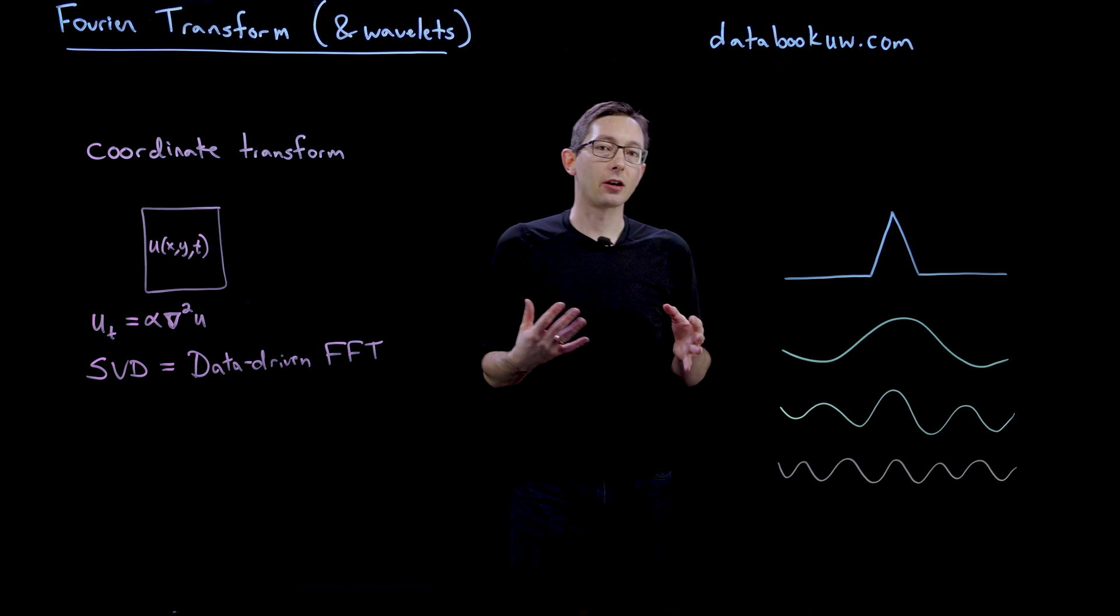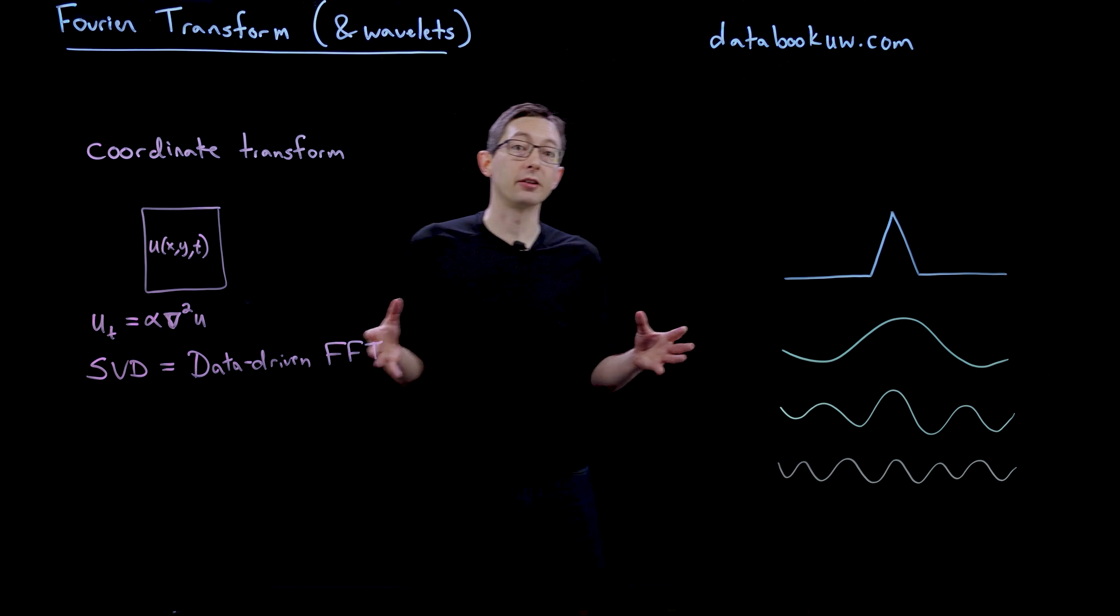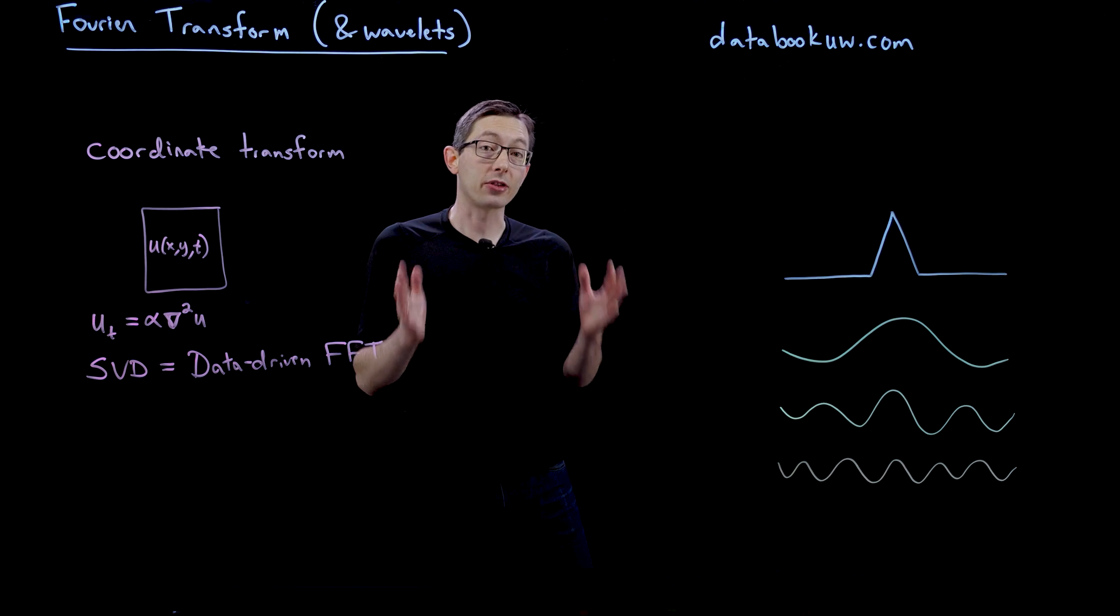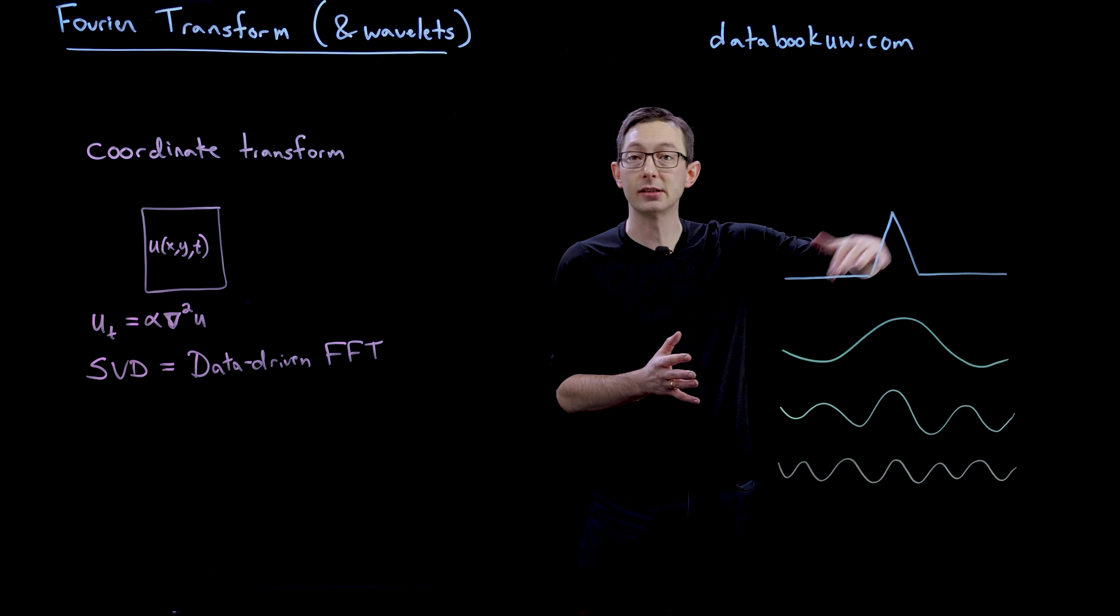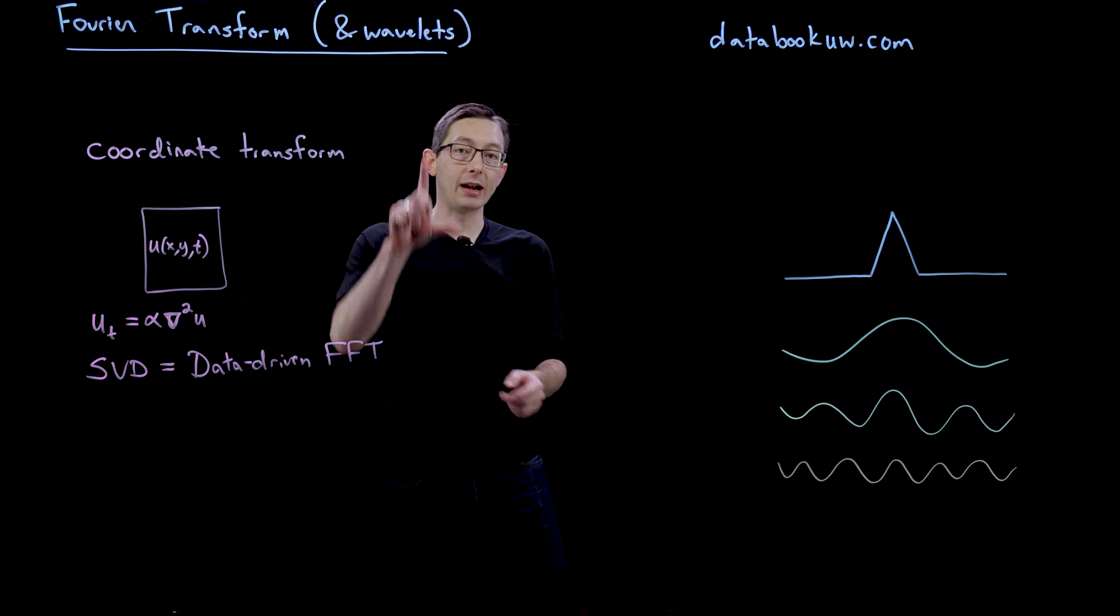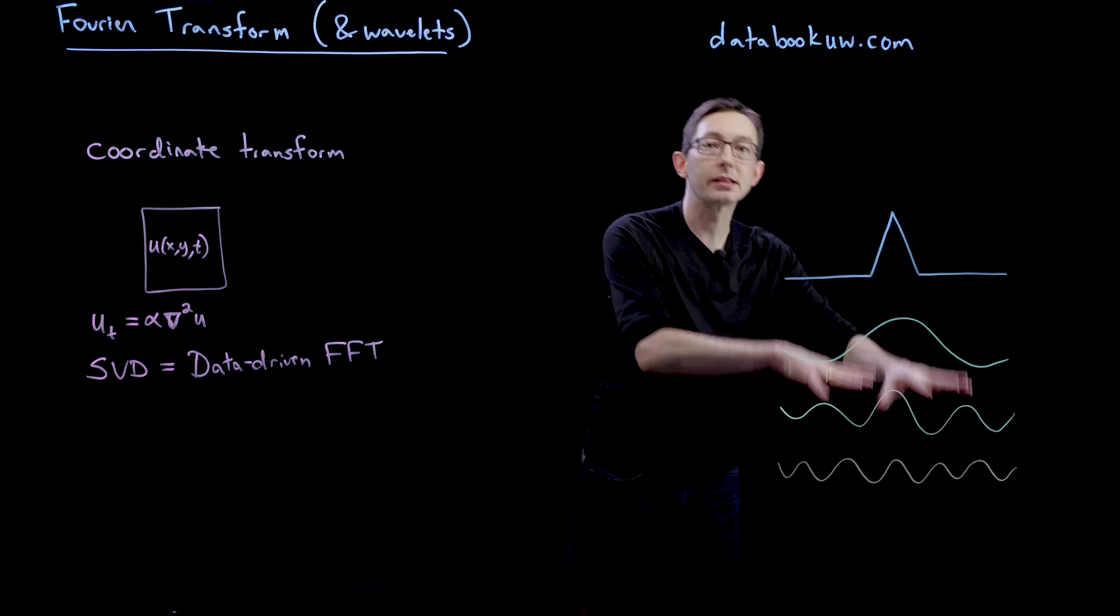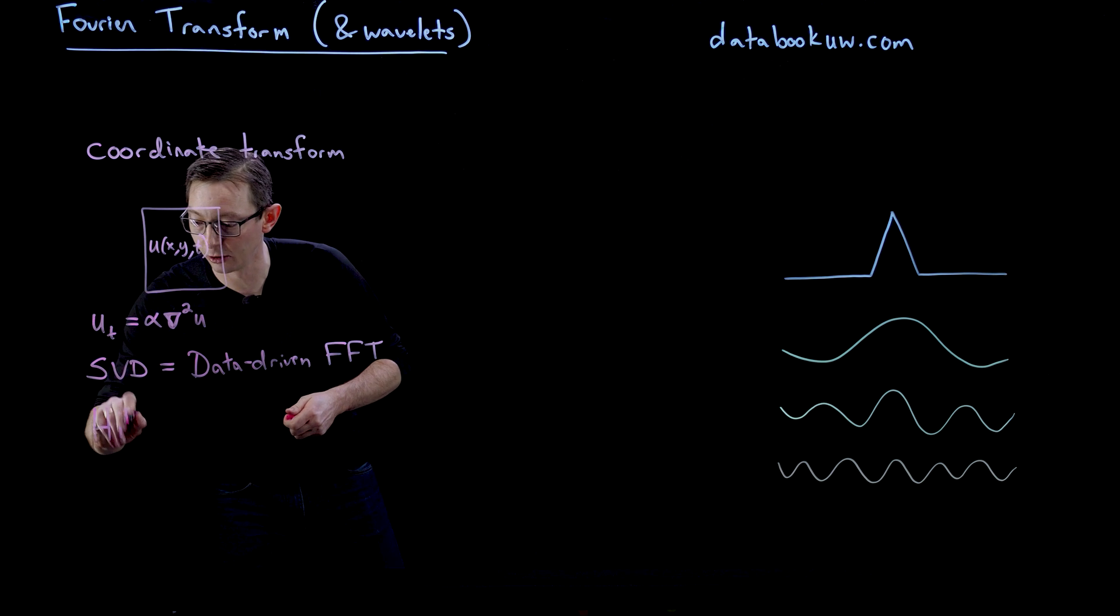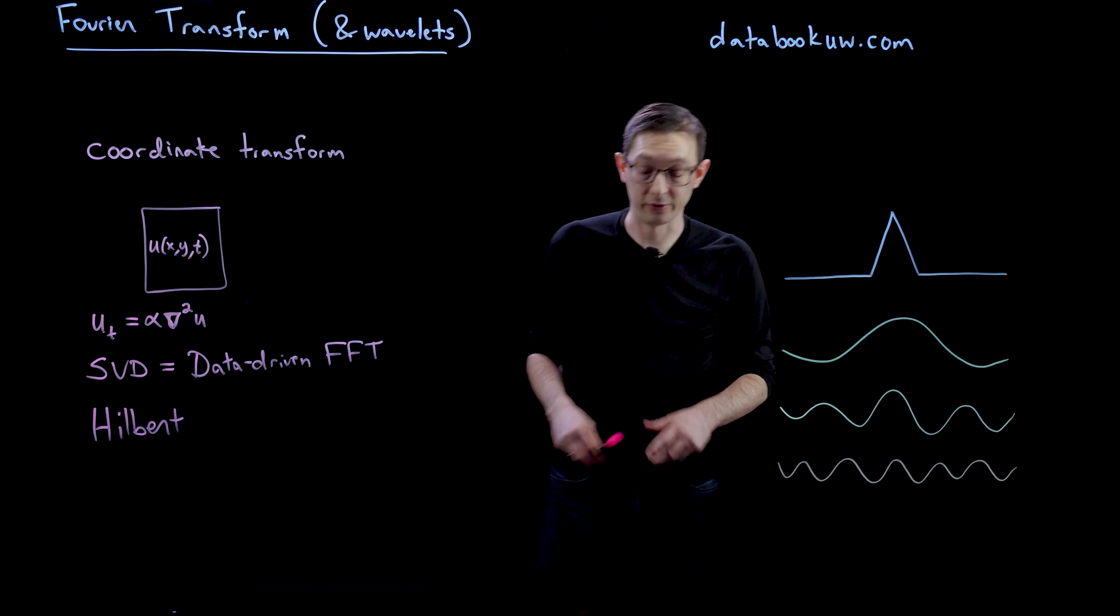This laid the foundation for our understanding of function spaces like the Hilbert space, which was pivotal in our understanding of quantum mechanics. This idea that sines and cosines form an orthogonal basis for the space of possible functions. Just like in a vector space you have x and y coordinates forming a basis for two-dimensional vector space, your sines and cosines form a basis for function space. That was really important for Hilbert spaces, which have been foundational for our modern understanding of mathematical physics.